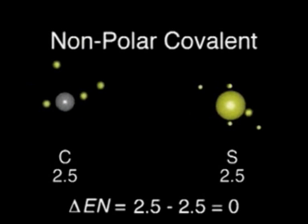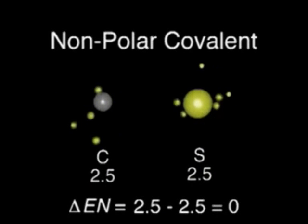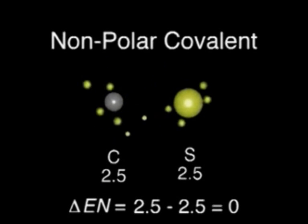When bonding atoms have nearly equal electronegativities, neither can attract electrons away from the other. In a carbon-sulfur bond, the electron pair is shared almost equally between the two atoms, resulting in a covalent bond.